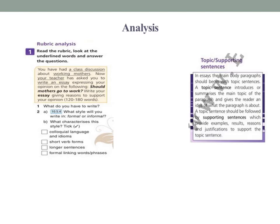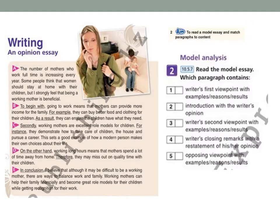What do you have to write? Write your essay giving reasons to support your opinion. What style will you write in — formal or informal? What characterizes this style? Tick writing an opinion essay. Then read a model essay and match the paragraphs to the content. There are six paragraphs.